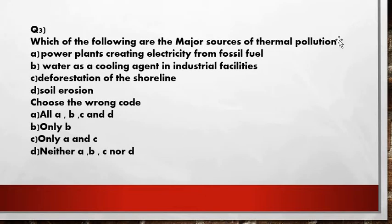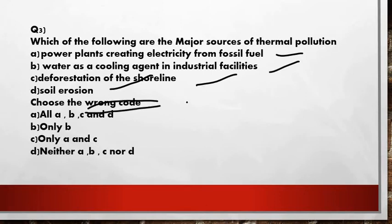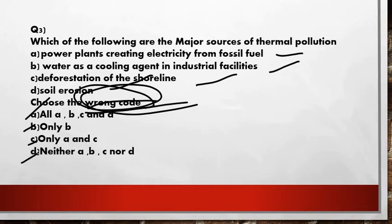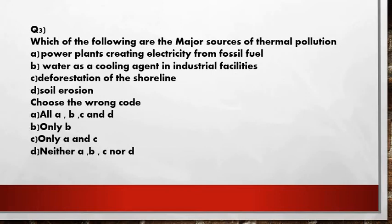The third question asks: which of the following are major sources of thermal pollution? Statement A: power plants creating electricity from fossil fuels. Statement B: water as a cooling agent in industrial facilities. Statement C: deforestation of shorelines. Statement D: soil erosion. You are asked to choose the wrong code. Options given are: all of the above, only B, only A and C, or neither A, B, C, nor D.